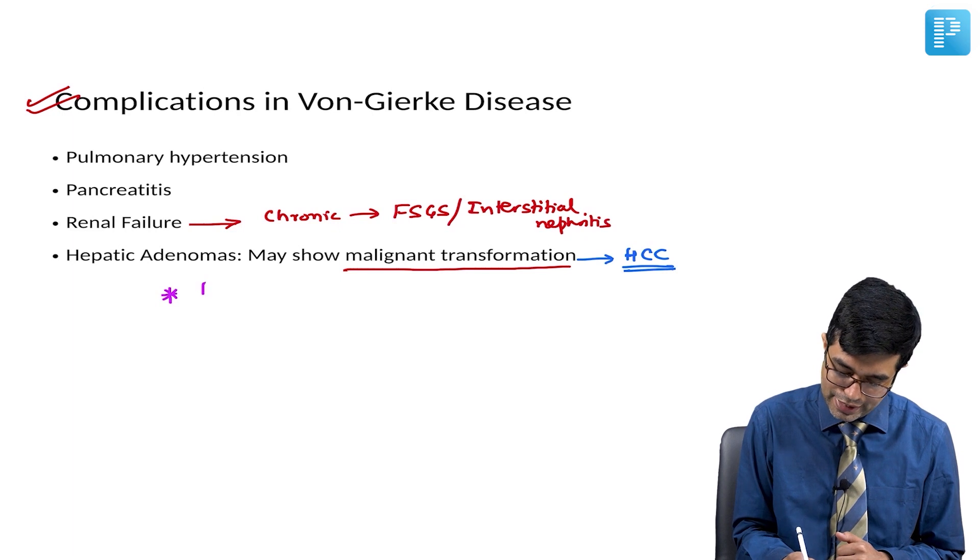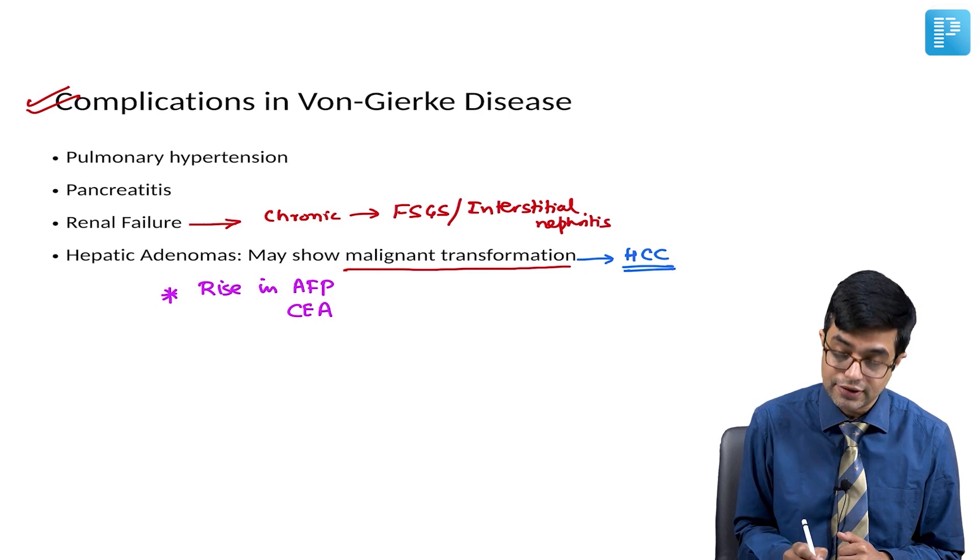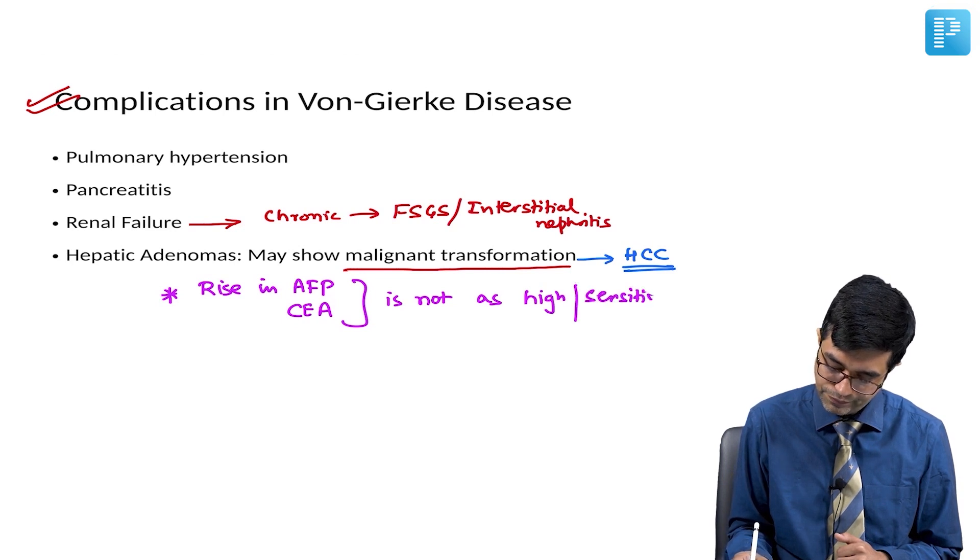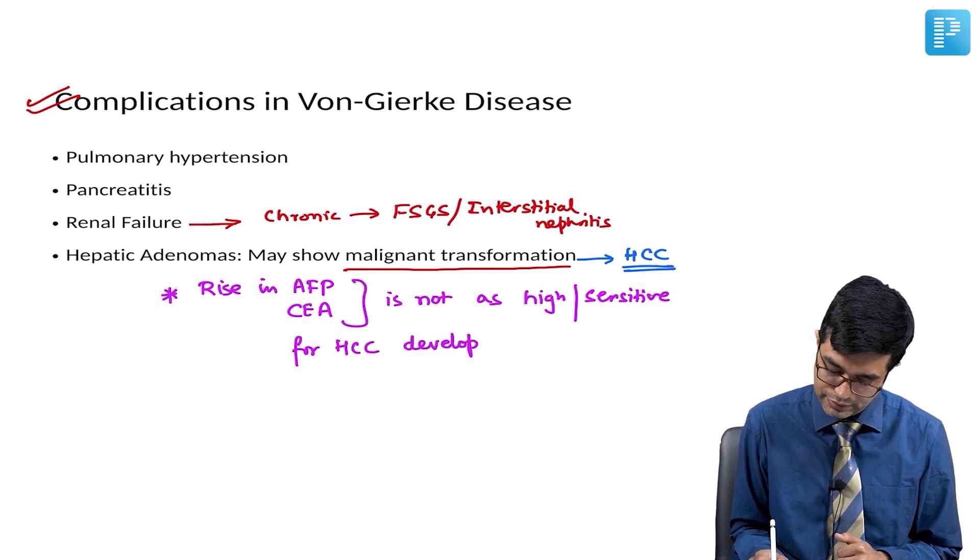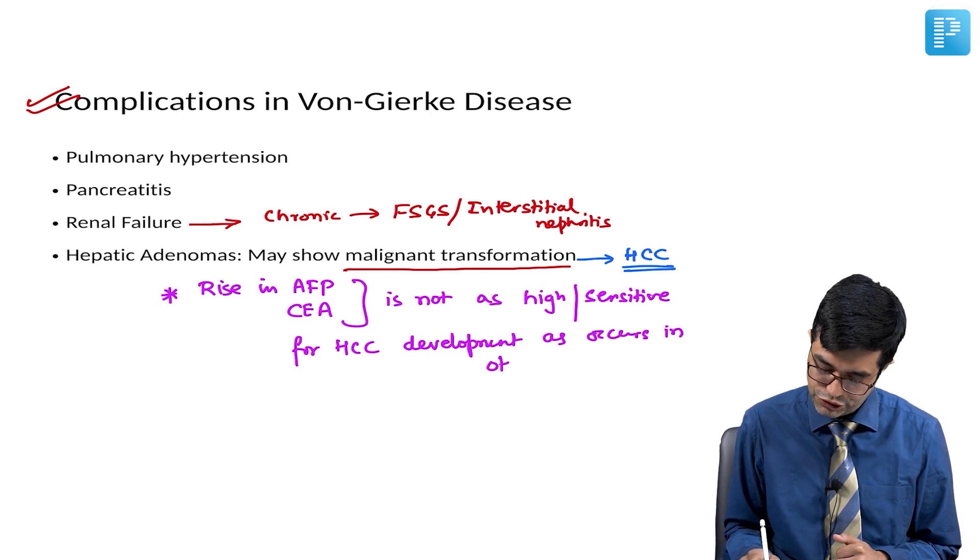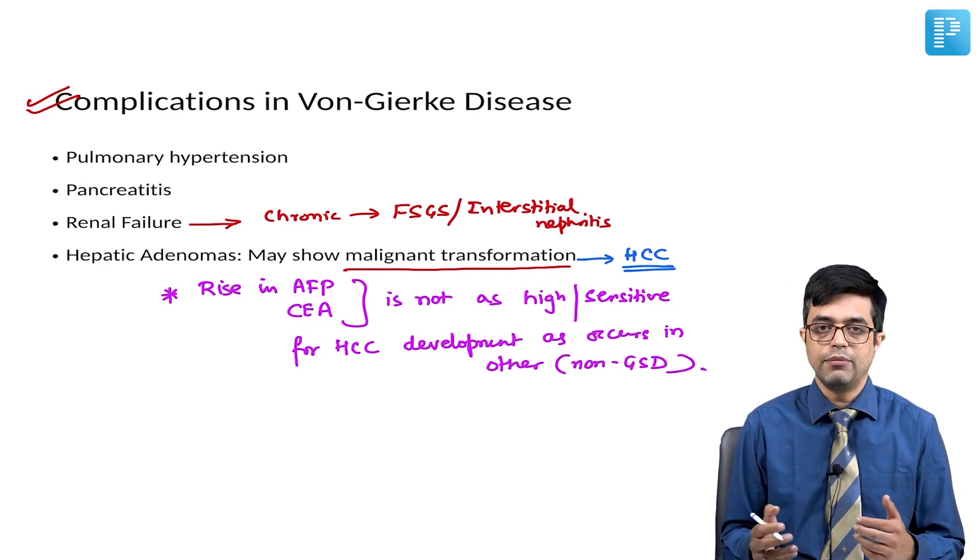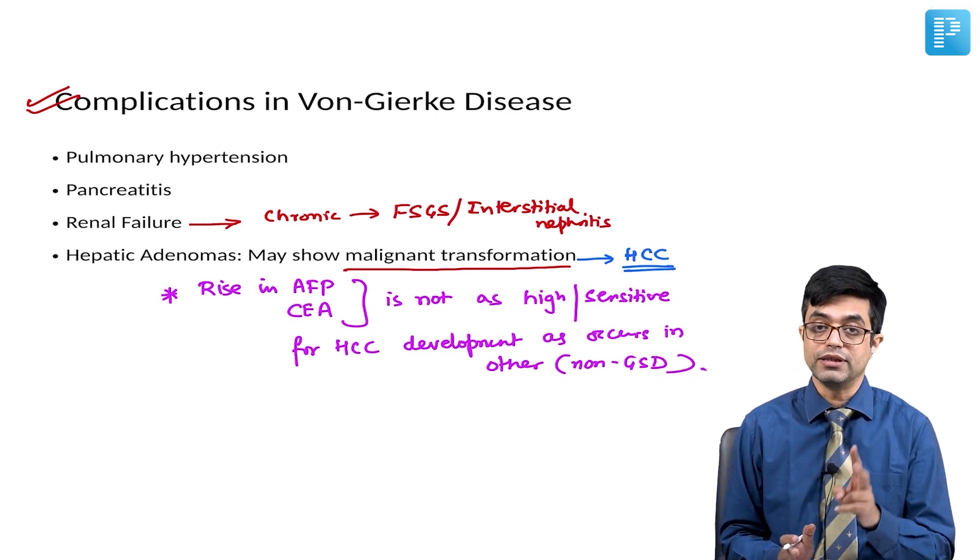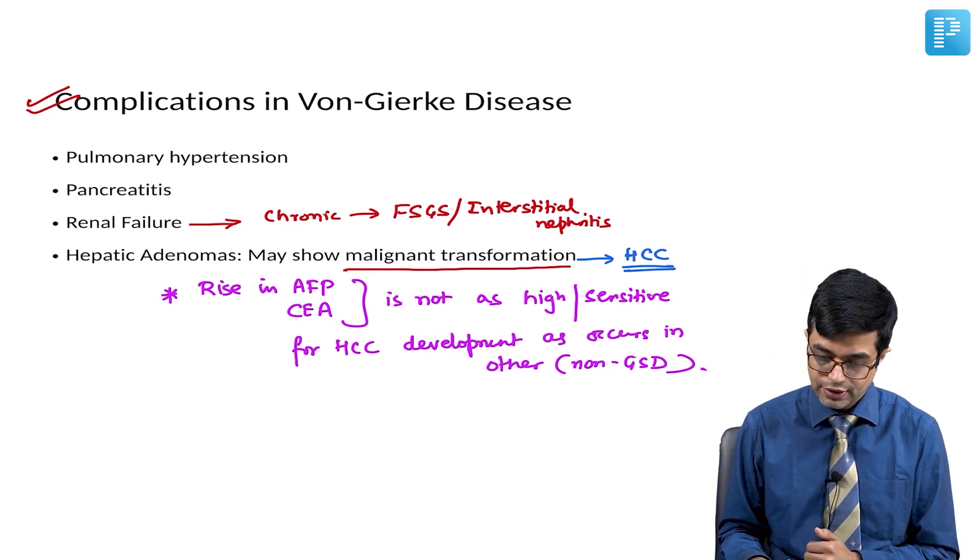So, you can put a star and write the keyword that rise in AFP and CEA and other tumor markers is not as high or sensitive for HCC development as it occurs in other conditions like non-GSD related hepatocellular carcinomas. So, this is an important point, very prominently mentioned in Nelson at two places. This is something you should know.